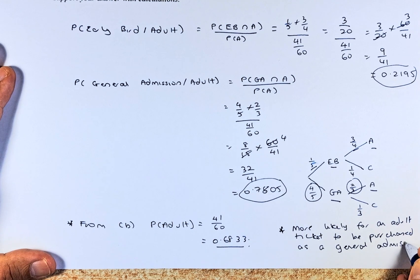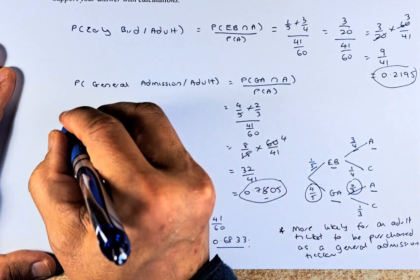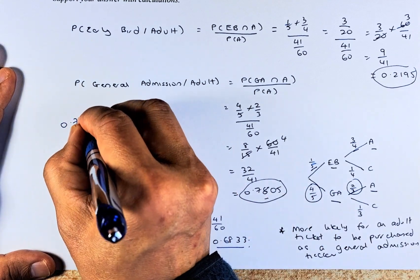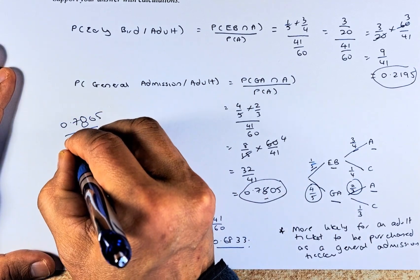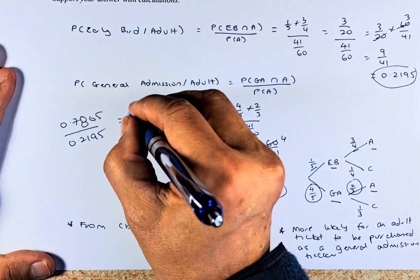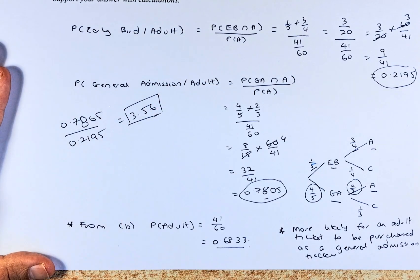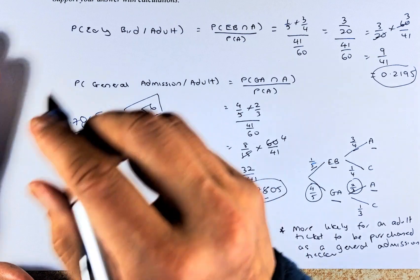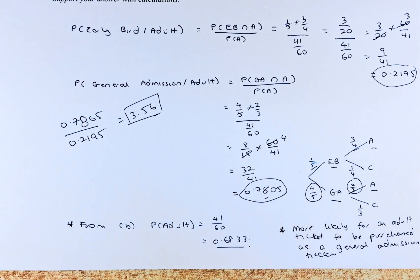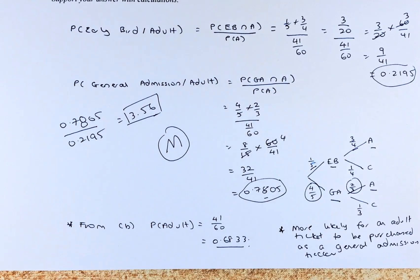This is because if you take 0.7805 divided by 0.2195, you get 3.56. It's 3.56 times more likely to be a general admission ticket compared to the early bird ticket. That is how you answer this question, and if you can answer it, you will earn merit M5, which is 5 points for this paper.